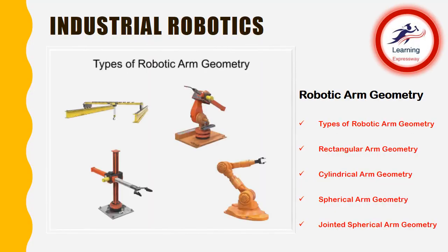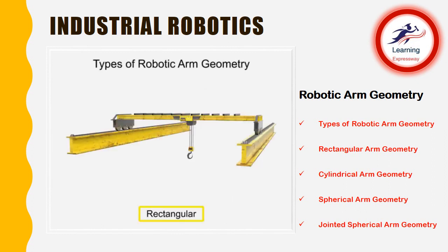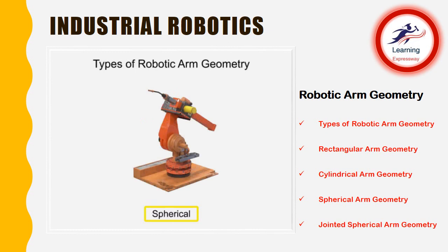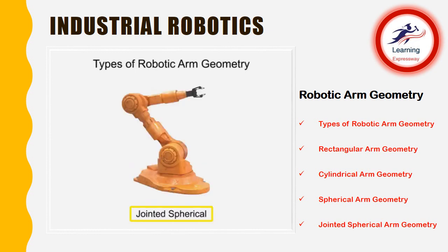There are four main types of robotic arm geometry: rectangular, cylindrical, spherical, and jointed spherical.